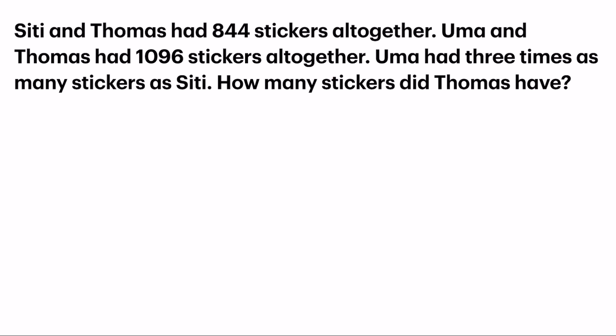And do you observe something in the two scenarios? Thomas is the repeated person. So this question is a repeated identity type of question.